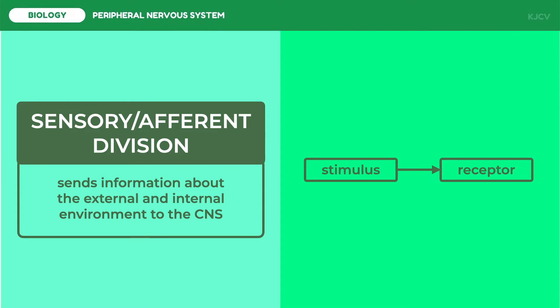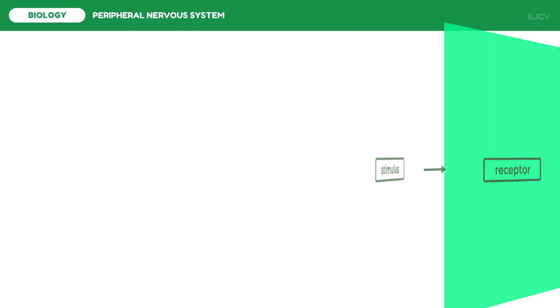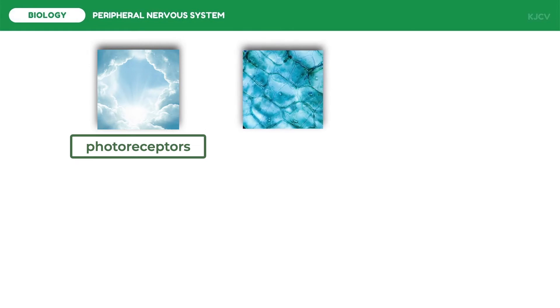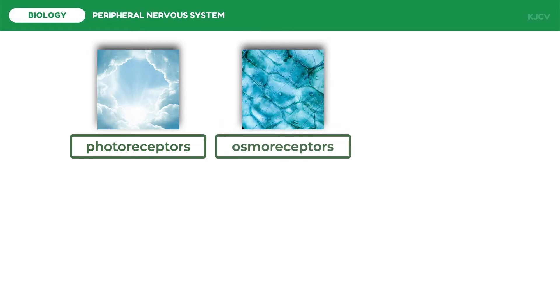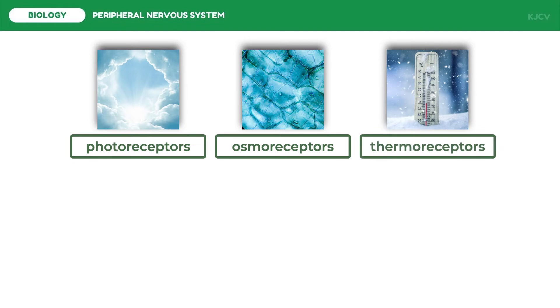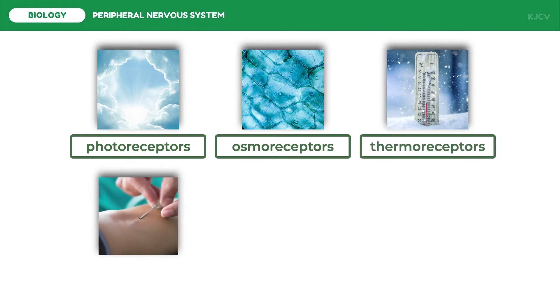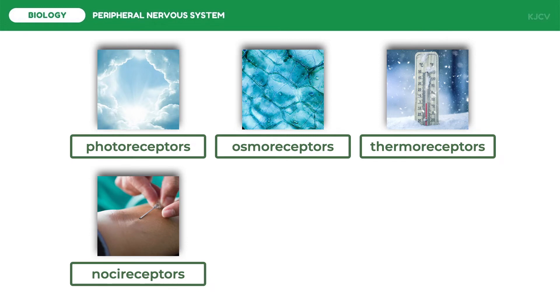Receptors have differential sensitivities to various stimuli depending on the type of energy to which they ordinarily respond. Receptors are categorized as follows: photoreceptors are responsive to visible wavelengths of light; osmoreceptors detect changes in the concentration of solutes in the extracellular fluid and the resultant changes in osmotic activity; thermoreceptors are sensitive to heat and cold; and nociceptors, or pain receptors, are sensitive to tissue damage such as pinching or burning, or to distortion of tissue. Intense stimulation of any receptor is also perceived as painful.